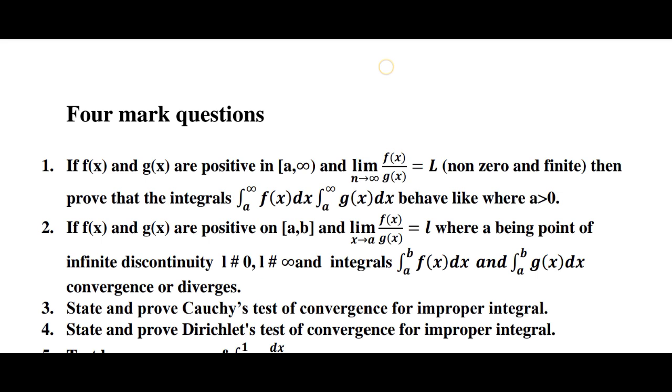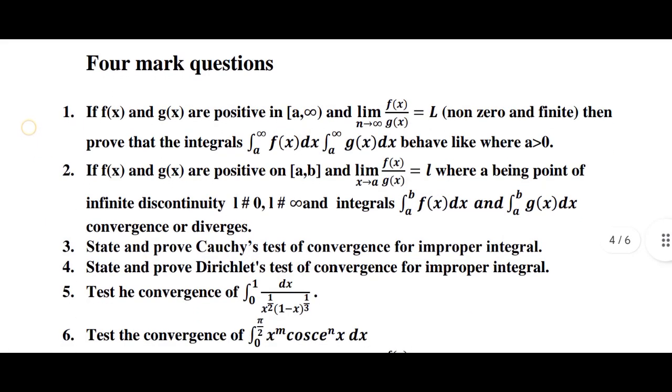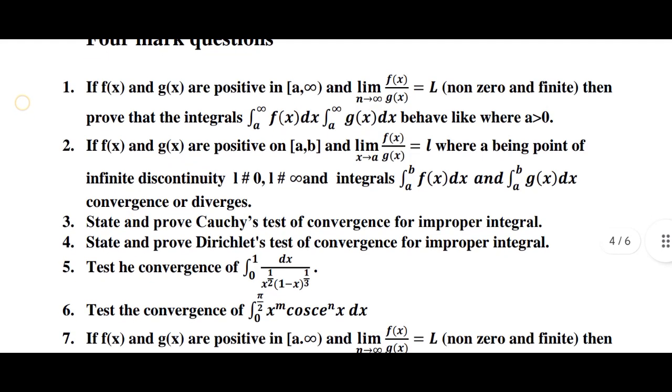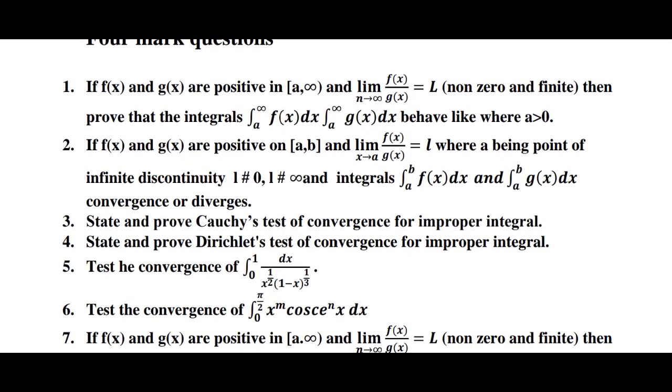Second question: If f of x and g of x are positive on a comma b, and limit x goes to a, f of x over g of x equals L, where a being point of infinite discontinuity, and integrals integration from a to b f of x dx and integration from a to b g of x dx converge or diverge. Third question: State and prove Cauchy's test of convergence for improper integral. Fourth question: State and prove Dirichlet's test of convergence for improper integral.